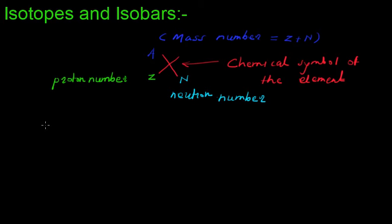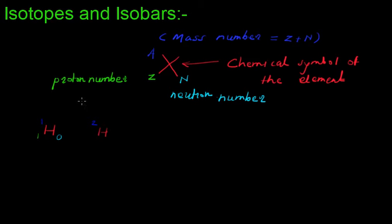Let's take hydrogen as an example. The atomic number of hydrogen is 1 and the atomic mass is 1, so the number of neutrons is automatically 0 — this is hydrogen-1. Hydrogen-2 has a mass number of 2, and hydrogen-3 has a mass number of 3.